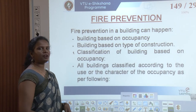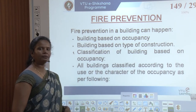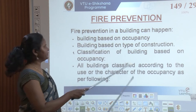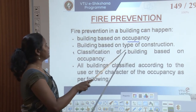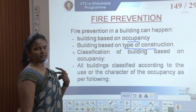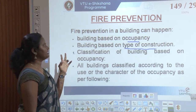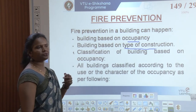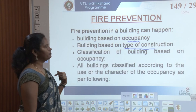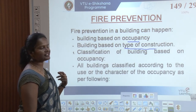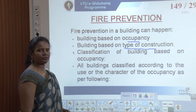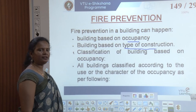Now we will see fire prevention. Fire prevention in a building can happen in many ways, but it is broadly based on two approaches: building occupancy and type of construction. These two types of fire prevention classifications are produced by BIS — that is, the Bureau of Indian Standards — under the National Building Code.